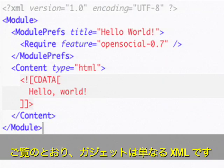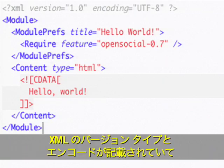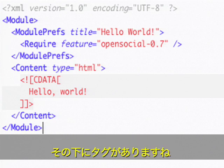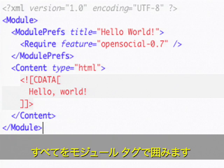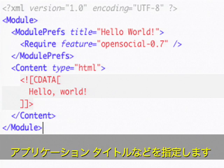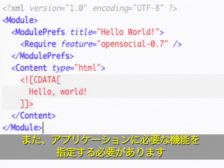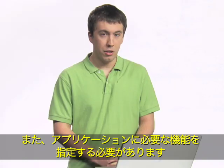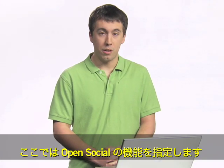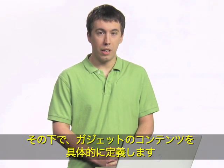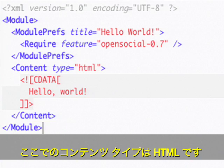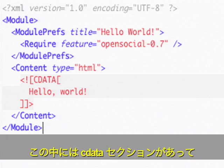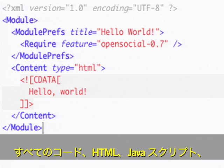As you can see, a gadget is just XML. At the top of the file you can see the XML version type and encoding. Below that you can see the tags that specify this as a gadget file. We open everything up with a module tag, and inside of that we have module preferences that specify things like the application's title and required features — here requiring the OpenSocial feature. Below that we actually define the content of the gadget. The content type is HTML, and inside of that we have a CDATA section which is where all of our code, our HTML and JavaScript, go.